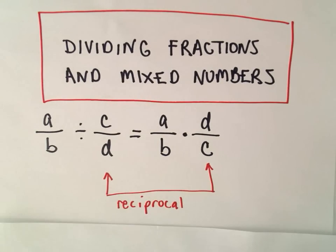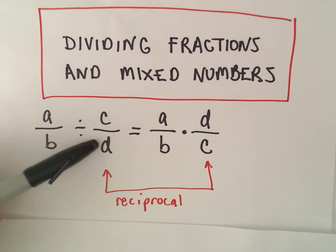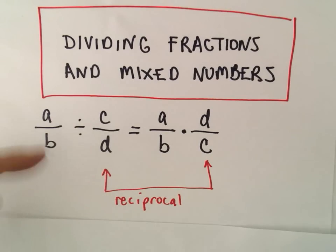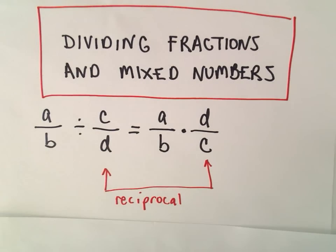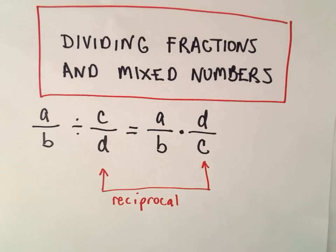So the reciprocal of a fraction, you just take the fraction and flip it over. The numerator becomes the denominator and the denominator becomes the numerator. You don't change the sign or do anything else, just flip the fraction.